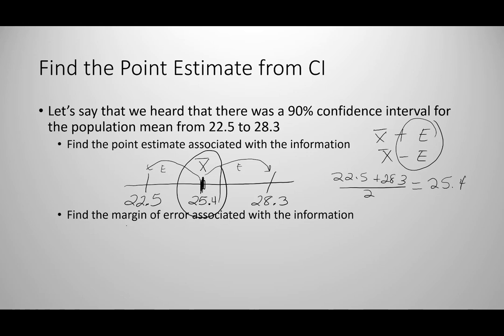The second part asks for the margin of error associated with that interval. Since X bar is the midpoint, I just find how far my point estimate is from either end of the interval. Taking 28.3 minus 25.4 gives 2.9. So the margin of error for this example is 2.9.